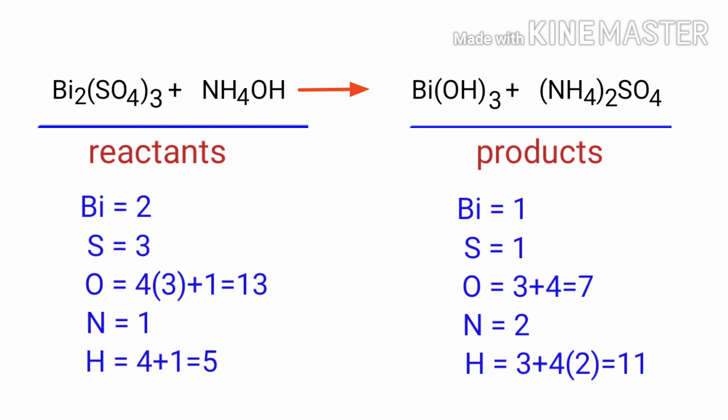On the products side there are 1 bismuth atom, 1 sulphur atom, 7 oxygen atoms, 2 nitrogen atoms and 11 hydrogen atoms. The number of atoms are not balanced on both sides.